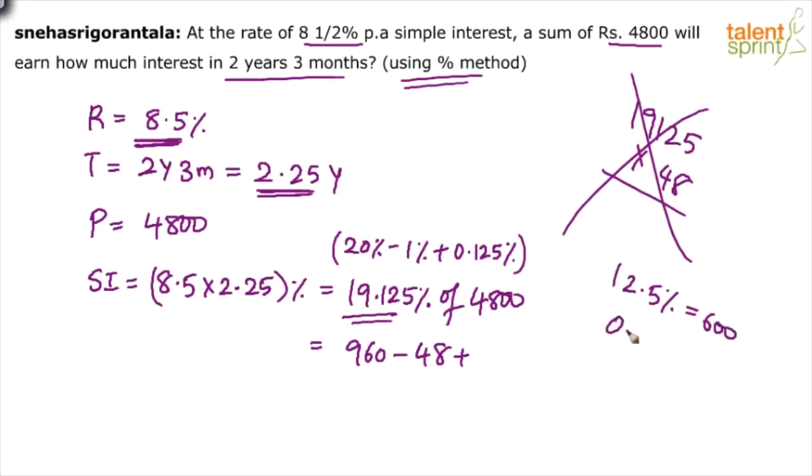But what do we want? We want 0.125 percentage. We are dividing this by 100. Right? So, divide this also by 100. It will be equal to what? 6. So, plus 6 will be the value. 0.125% will be 6.